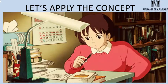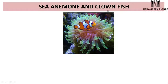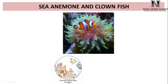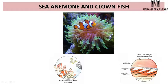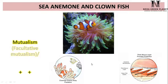Now let's apply the concept. Consider sea anemone and clownfish. Sea anemone is found on the coral reef and secretes mucus which provides shelter to clownfish. In return, clownfish helps in scaring away predators. Sea anemone is protected and the fish gets protection through the mucus layer in the tentacles of sea anemone. Since both are benefited, the relationship is mutualism — specifically, facultative mutualism.